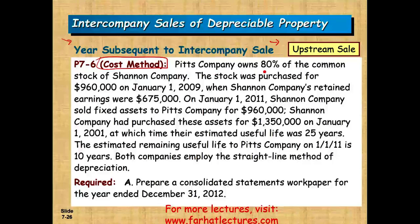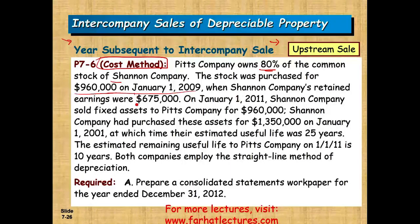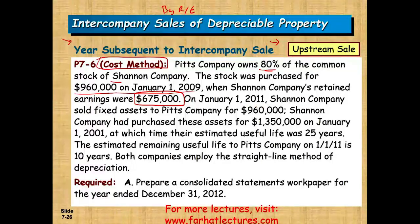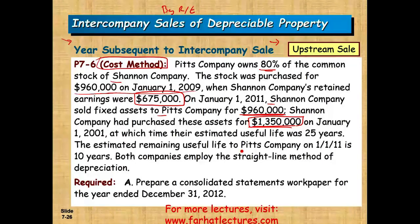P Company owns 80% of S Company. The stock was purchased for $960,000 on January 1st, 2019, when Shannon Company's retained earnings was $675,000. On January 1st, 2011, Shannon Company (S) sold a fixed asset to P Company for $960,000. S Company had purchased these assets for $1,350,000 on January 1st, 2001, with an estimated useful life of 25 years. The estimated remaining useful life to P Company on January 1st, 2011 is 10 years.